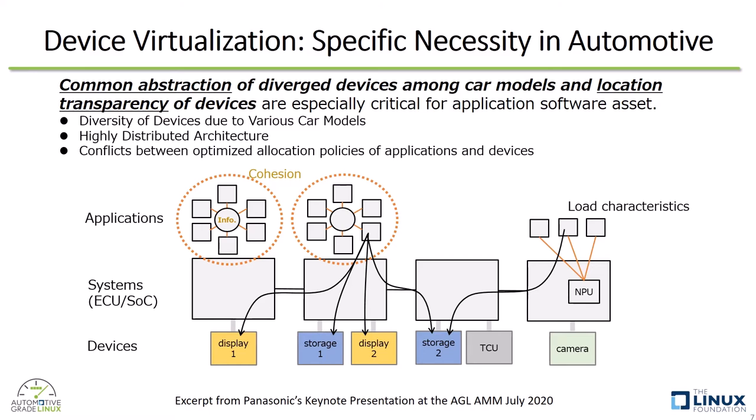Even in such an environment, we need to preserve our software assets. So from the application point of view, location transparency is another critical issue. Thus, we need device virtualization technology that satisfies these two necessities.